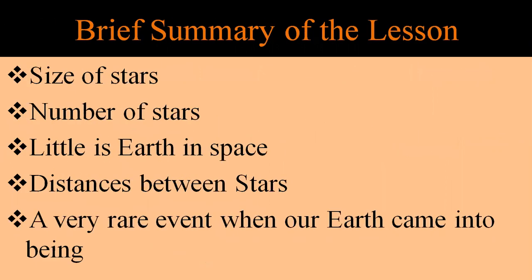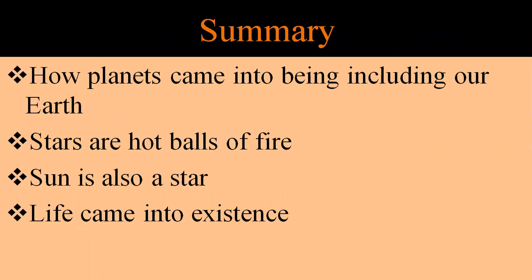Let me tell you a brief summary of the lesson. In this lesson, the writer has described the size and number of stars, how little our earth is in space, distances between stars, and most importantly, the very rare event when our earth came into being. Then how planets came into being, including our earth. Stars are hot balls of fire, and the sun is also a star.